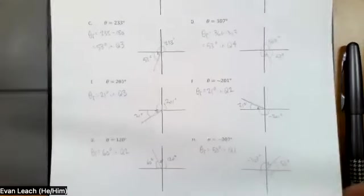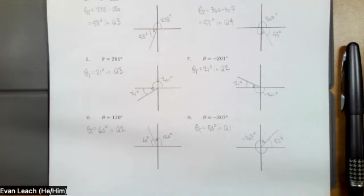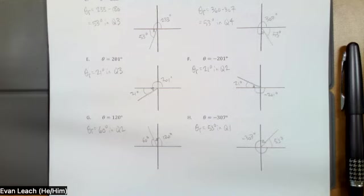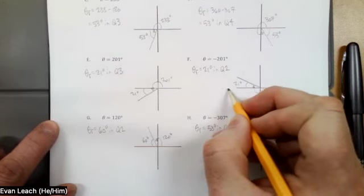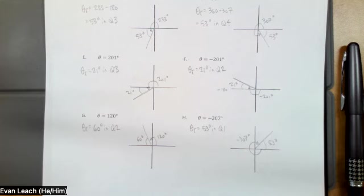The second set of problems includes angles with negative measure. For 201 degrees, we go counterclockwise and end up in the third quadrant, 21 degrees past 180, so the reference angle is 21. For negative 201 degrees, we go clockwise and are still 21 degrees past negative 180, so the reference angle is also 21. Reference angles should always be positive and acute, and always go towards the x-axis, never the y-axis.